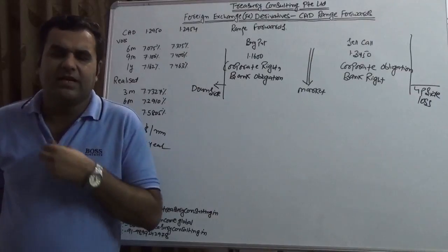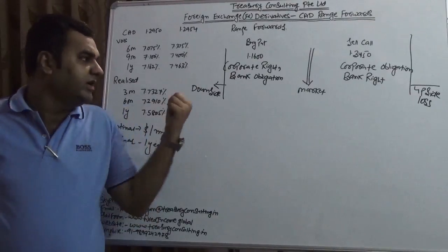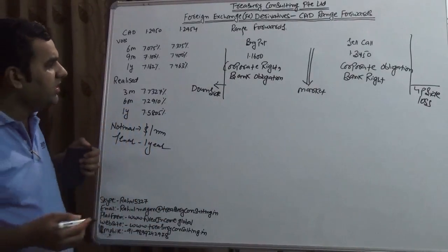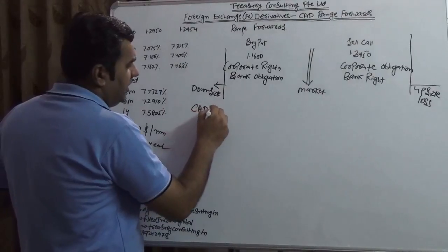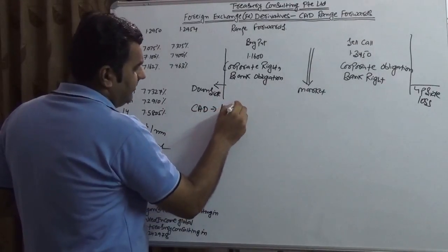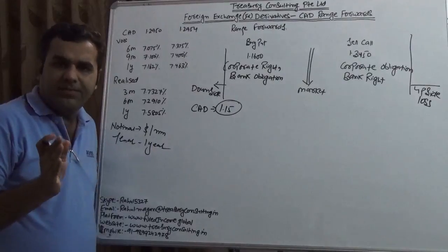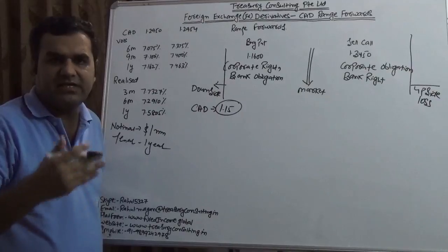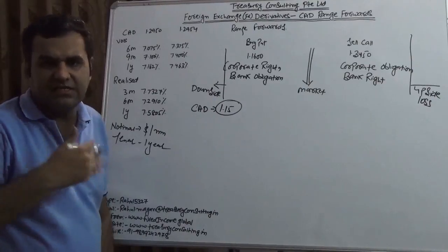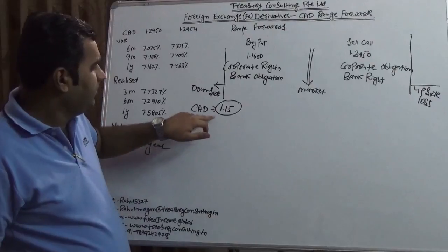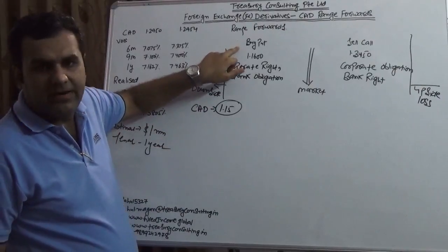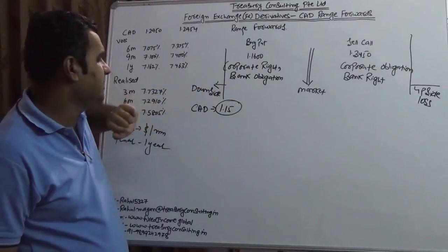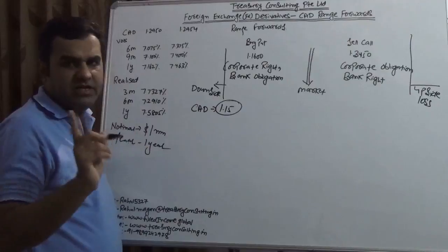I am taking three rates, all arbitrary. One is downside, one is market, and one is upside. So one year down the line, assuming the CAD turned out to be 1.15. Now what a corporate would be doing, a Canadian corporate who has the dollar receivable but whose functional currency is CAD, so he is subject to this, that is why he is taking this cash flow position. What he would do is he would be exercising this buy put, because this buy put means corporate right and bank obligation.